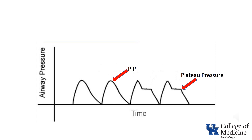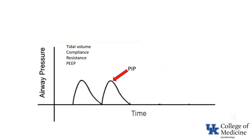Now it's time to consider the factors involved in determining both peak inspiratory pressure and plateau pressure. Peak inspiratory pressure is determined by tidal volume, compliance, resistance, and PEEP. The effect of tidal volume on peak inspiratory pressure is straightforward and will not be addressed further. Unless otherwise noted, the following discussion assumes volume-limited ventilation with a constant tidal volume and a constant inspiratory flow rate.